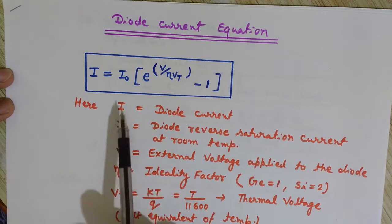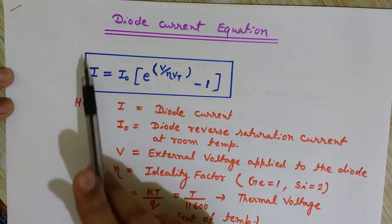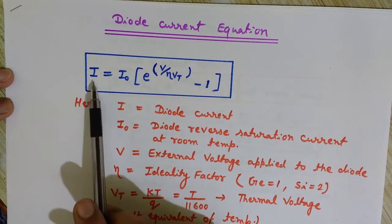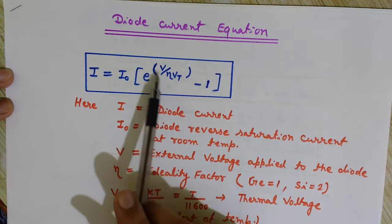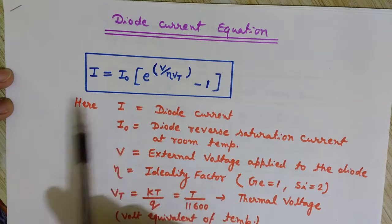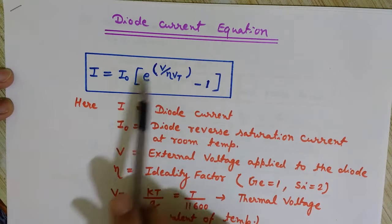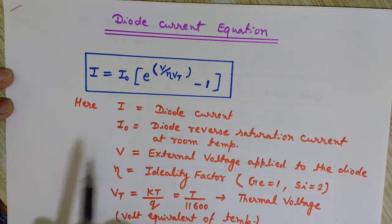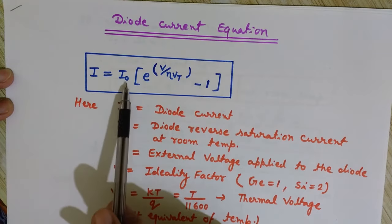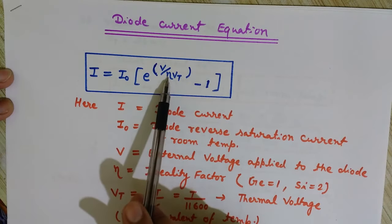I will explain all the symbols that we have used. This diode current equation tells us how much current flows through the diode when a voltage V is applied across it. It can be forward biased or reverse biased — we will see all the cases. The equation is: I equals I₀ times e to the power V divided by